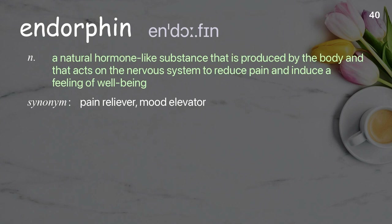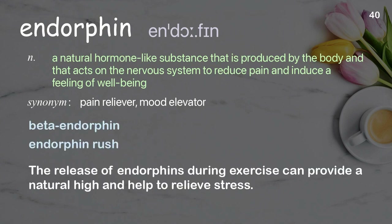Endorphin: a natural hormone-like substance that is produced by the body and that acts on the nervous system to reduce pain and induce a feeling of well-being. Examples: Beta-endorphin. Endorphin rush. The release of endorphins during exercise can provide a natural high and help to relieve stress.